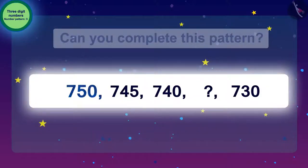If we need to get 745 from 750, we need to subtract 5 from it. To reach 740 from 745, we need to subtract 5 again.